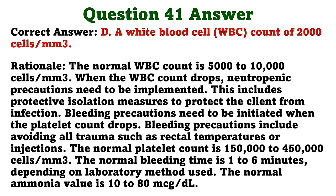The nurse is caring for a client with a nasogastric tube that is attached to low suction. The nurse monitors the client closely for which acid-base disorder that is most likely to occur in this situation? A. Metabolic acidosis. B. Metabolic alkalosis. The correct answer is B: metabolic alkalosis. The loss of gastric fluid via nasogastric suction or vomiting causes a metabolic condition. This also results in an alkalotic condition due to the loss of hydrochloric acid through gastrointestinal fluid losses. The options denoting respiratory acidosis and respiratory alkalosis can be easily eliminated.